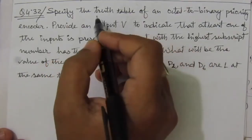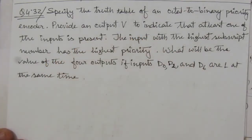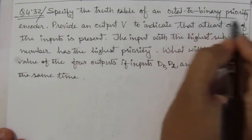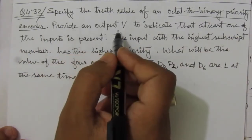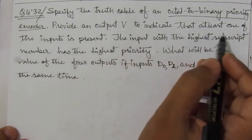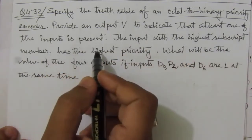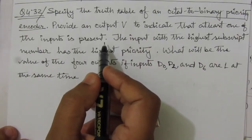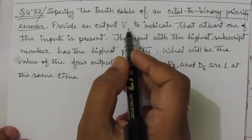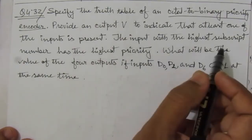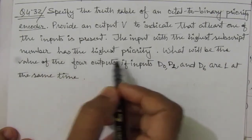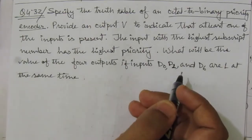The problem is: specify the truth table of an octal-to-binary priority encoder. We have to make the truth table of an octal-to-binary priority encoder, and we have to provide an output V to indicate that at least one of the inputs is present. Whenever at least one input value is equal to one, the V value will be one.